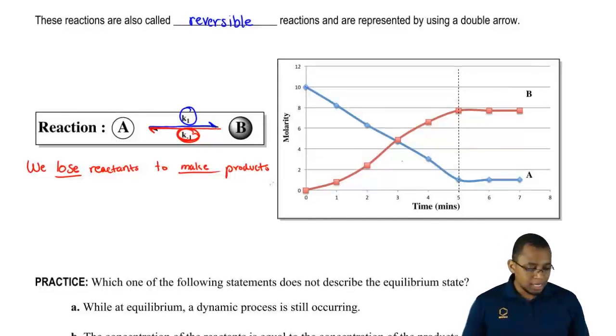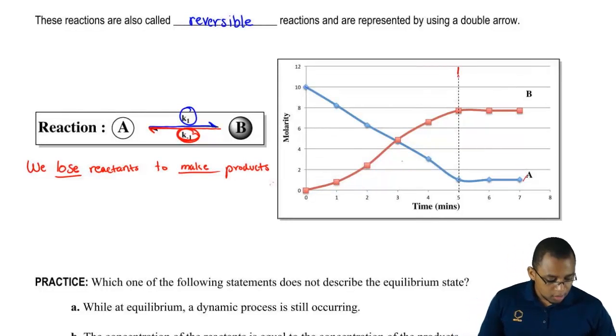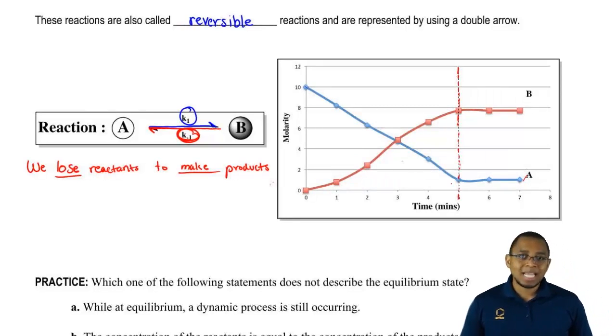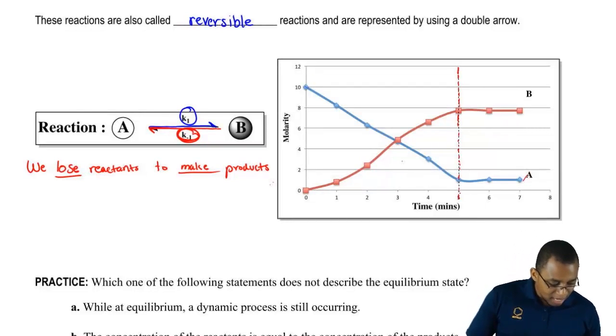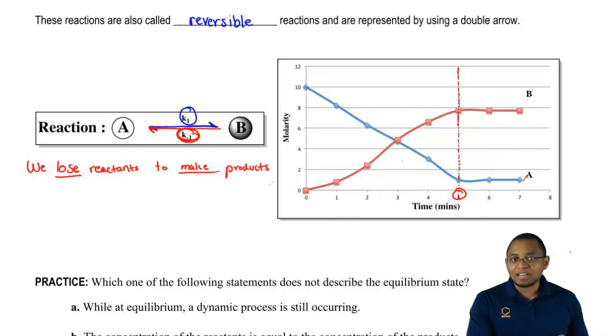And what you should realize here is eventually product amount will stop increasing and reactant amount will stop decreasing. And they'll reach a plateau for both of them. So their amounts are going to be held constant after a while. It's at this five-minute mark where they become constant in their concentrations. So we're going to say equilibrium happens at that exact moment. So that's how we're able to tell a reaction has reached chemical equilibrium.